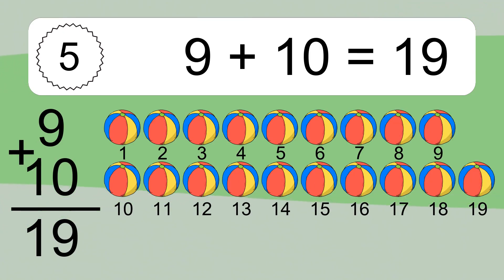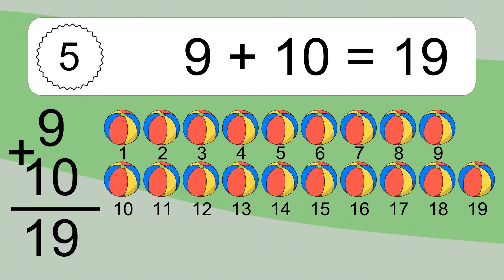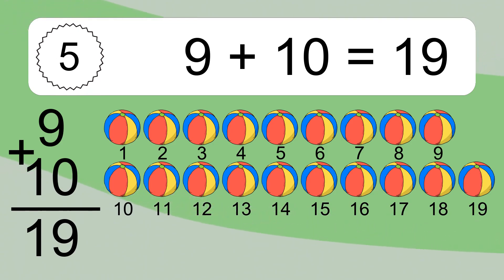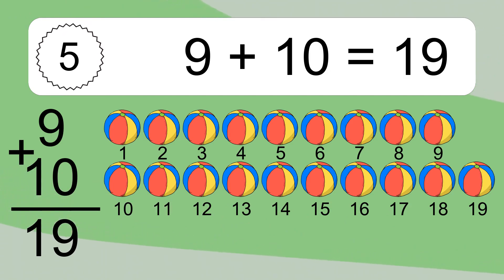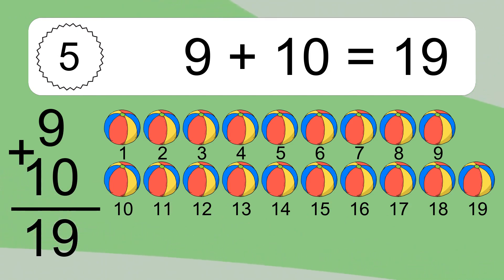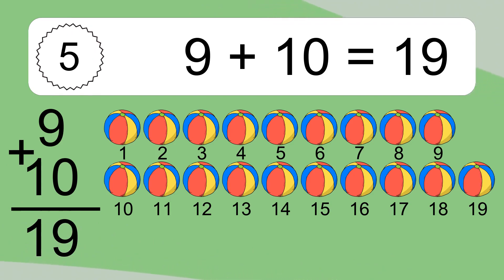Let's count it. 1, 2, 3, 4, 5, 6, 7, 8, 9, 10, 11, 12, 13, 14, 15, 16, 17, 18, 19.